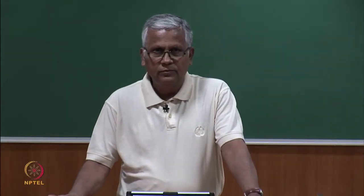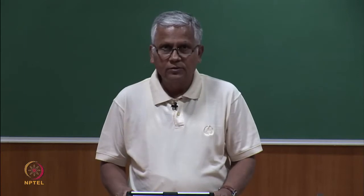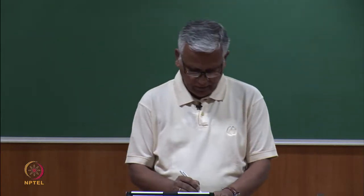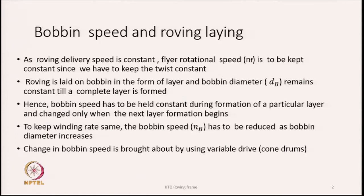Welcome. We are going to discuss bobbin speed regulations. As the roving delivery speed is constant, the flyer rotational speed is to be kept constant since we have to keep the twist constant. So we cannot change the speed of the flyer because twist has to remain constant and the roving delivery speed is also constant.